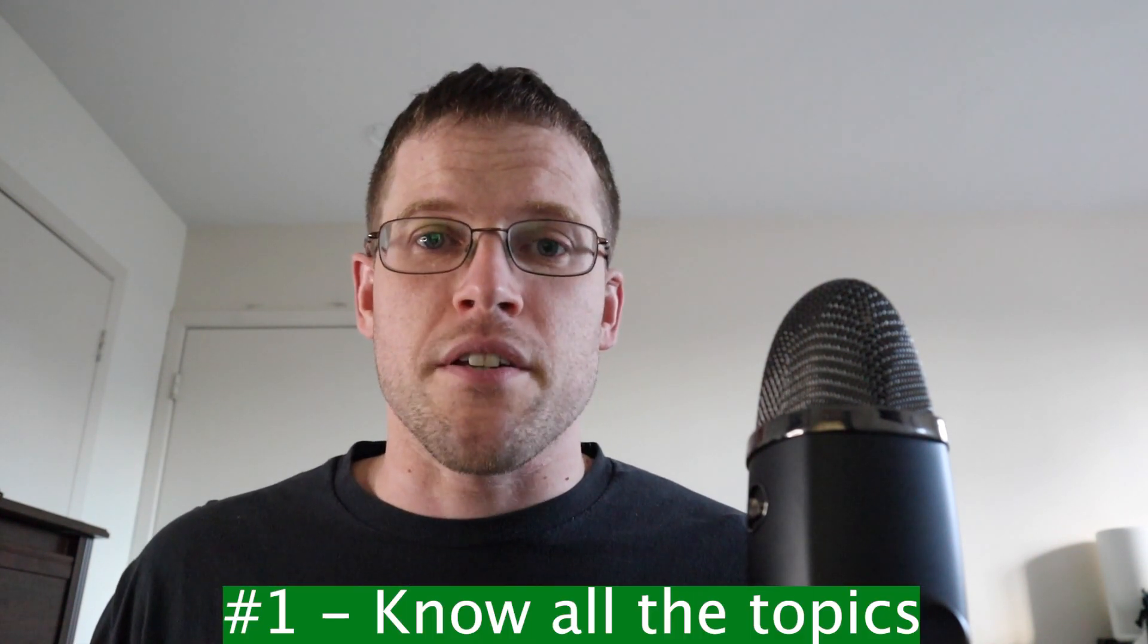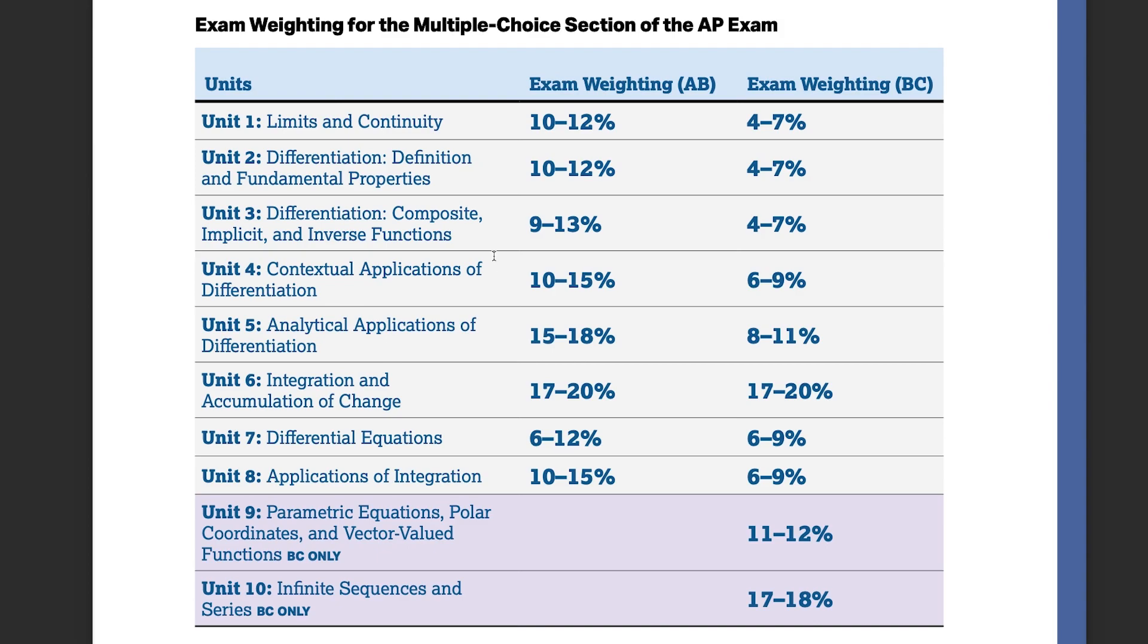So the first thing is know all the topics. If we check out this list here, you can see that there are 10 units on the AP Calculus BC exam, and there's 8 units on the AP Calculus AB exam. And this is the percentage breakdown of each topic. So you could see here that some of the big hitters are Unit 6, Unit 9, and Unit 10.